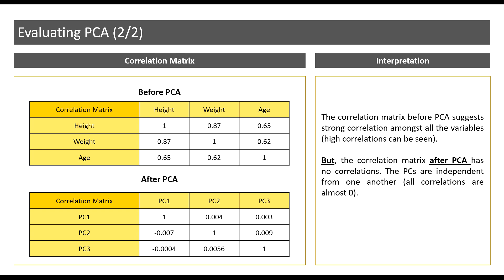Here, the correlation amongst the principal components is almost zero, suggesting that these principal components are independent. Recall, the aim of PCA was to convert linearly correlated variables, as indicated in the correlation matrix on top, into a new set of variables that are uncorrelated, as indicated in the correlation matrix at the bottom.